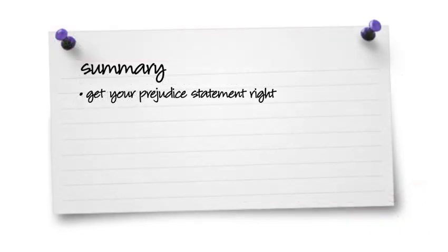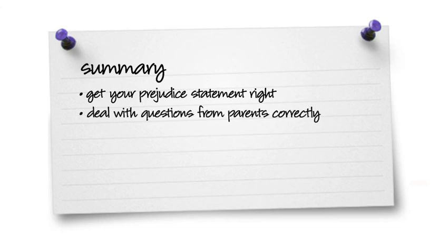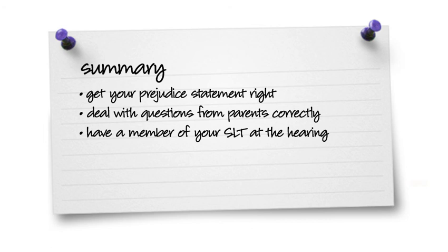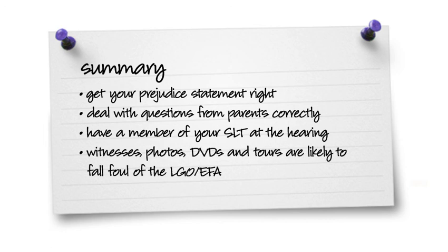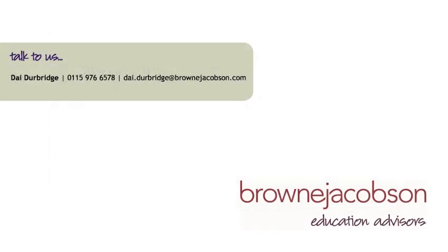In summary, getting your prejudice statement right and dealing with questions from parents is the best way of ensuring you have a strong position at an admissions appeal. Having a member of the senior leadership team at the hearing goes one step further and really impresses upon the panel the importance with which you take admissions appeals. Witnesses, photos, DVDs and tours are things we still need to avoid for the time being. Thank you for watching this training video. If you would like to comment or talk to me about any of the content, please feel free to give me a call — you will find my contact details on the website.